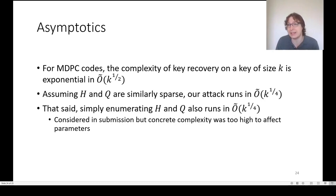What we do know for sure is that asymptotically, the attack must work even without considering weak keys. Because for the standard attack, the cost of key recovery is exponential in the square root of the size of the key, whereas our attack is exponential in the fourth root of the size of the key. That said, there's another simpler attack that does this, which is you just guess all the bits of h and q. That is considered in the submission document, but the concrete complexity was significantly too high to affect the parameters. And we think our attack is much closer to affecting the parameters if it doesn't, in fact, affect them.